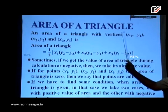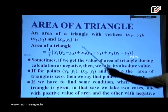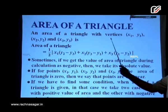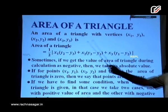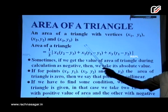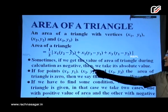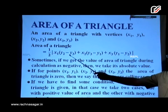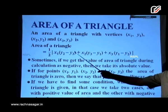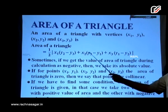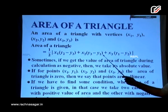The area of a triangle with vertices (x1, y1), (x2, y2), and (x3, y3) is: Area of a triangle equals half modulus x1 into (y2 minus y3) plus x2 into (y3 minus y1) plus x3 into (y1 minus y2).